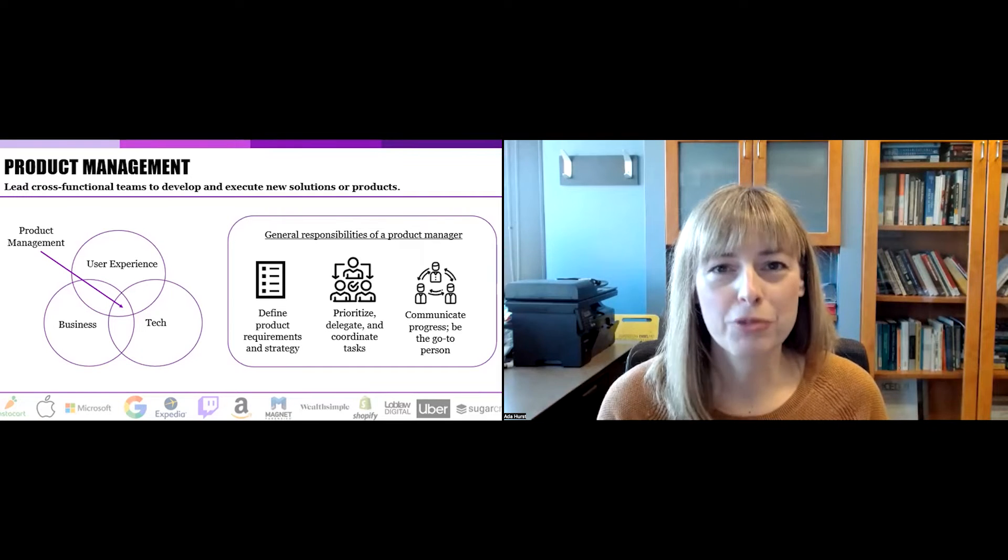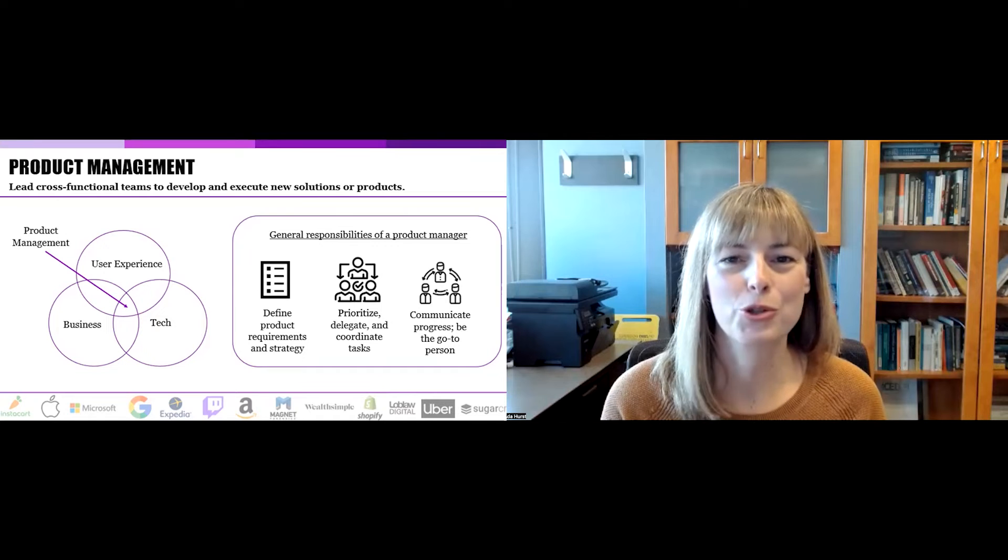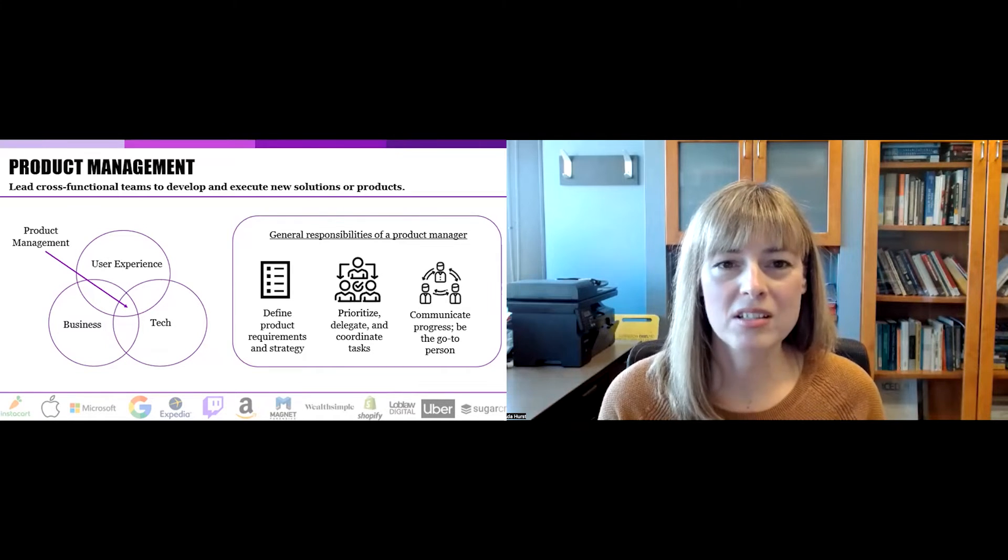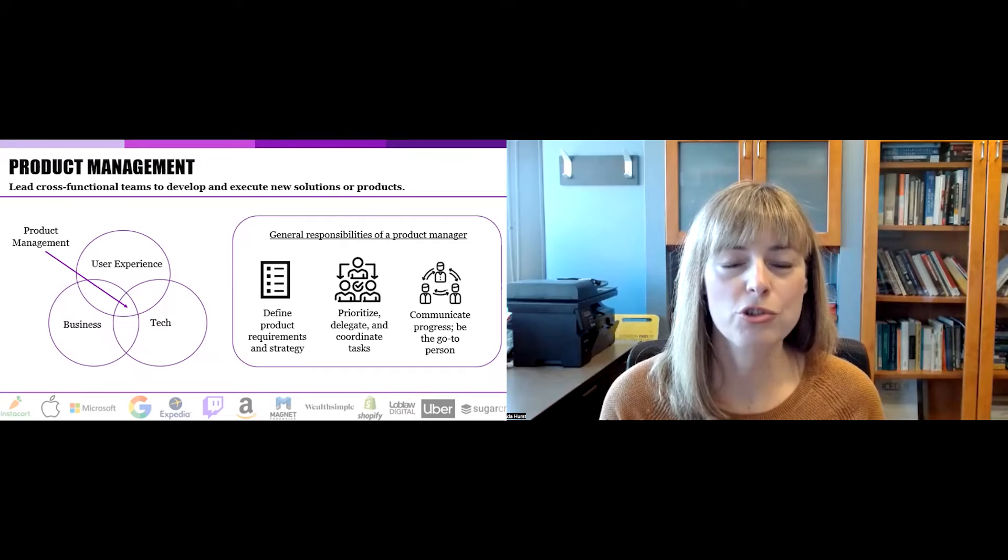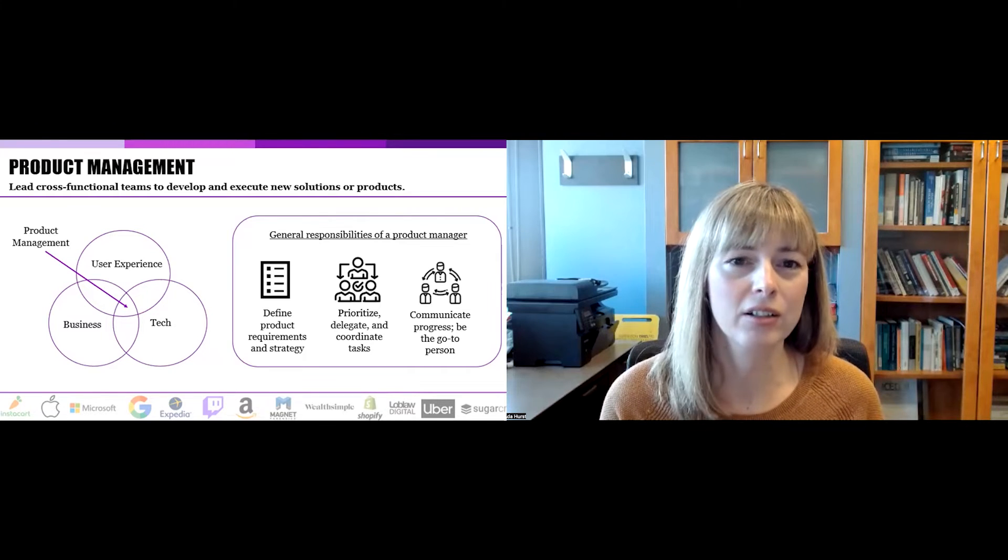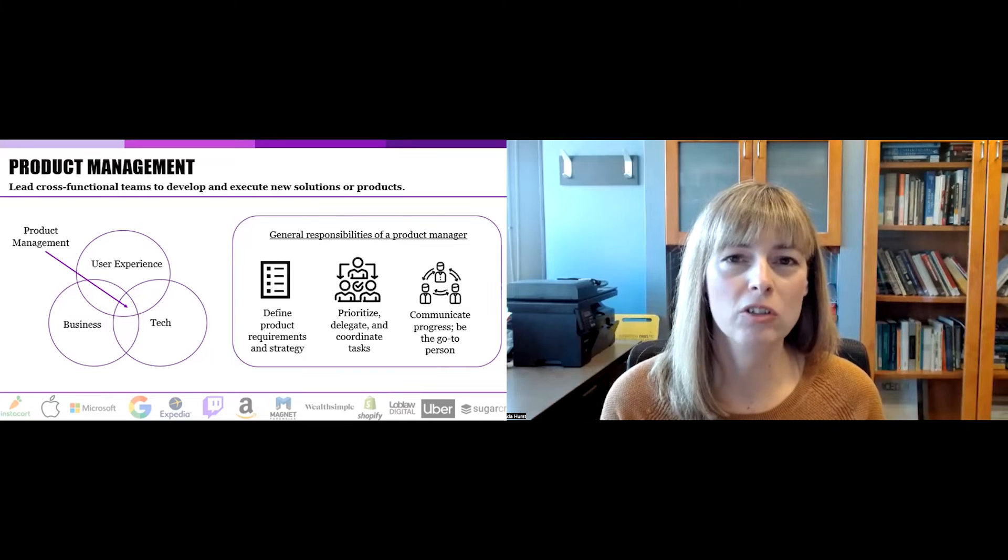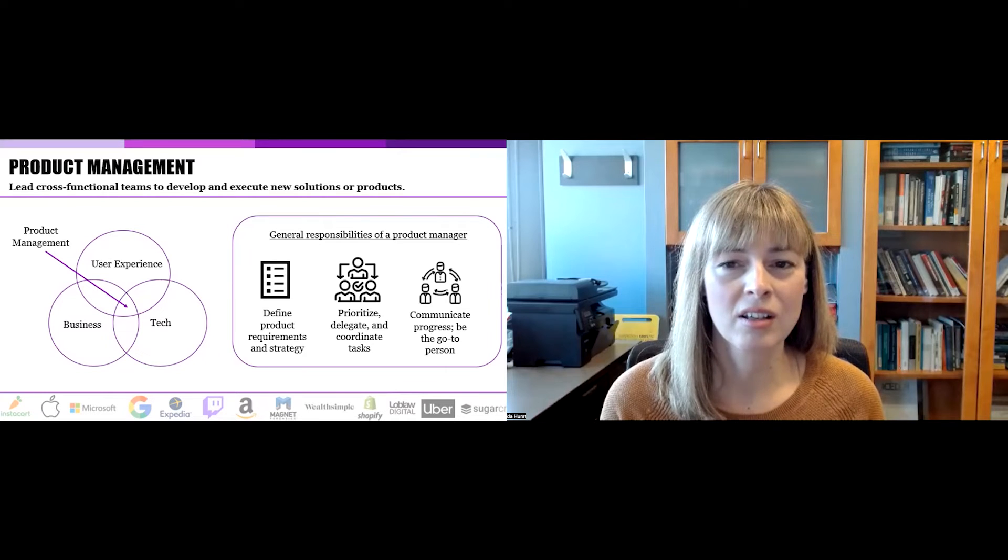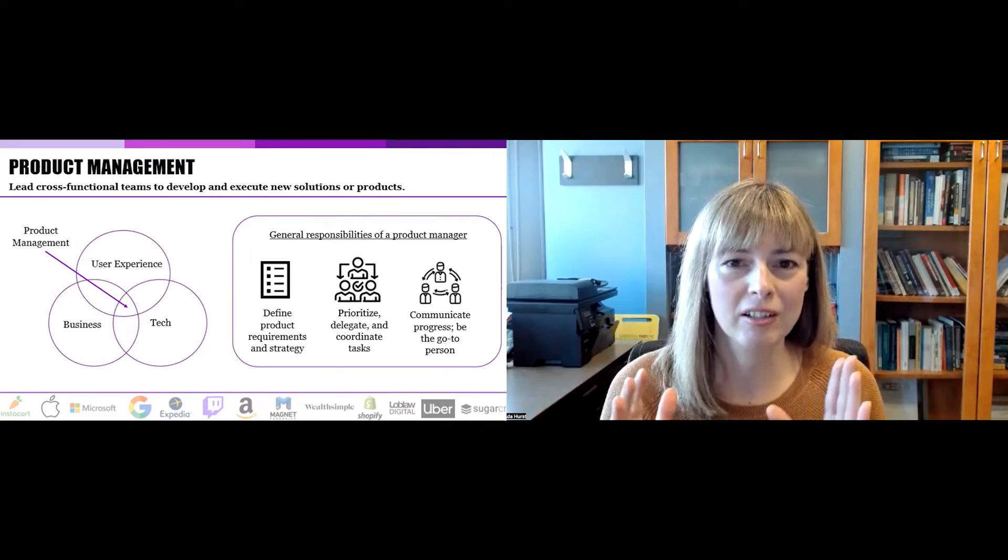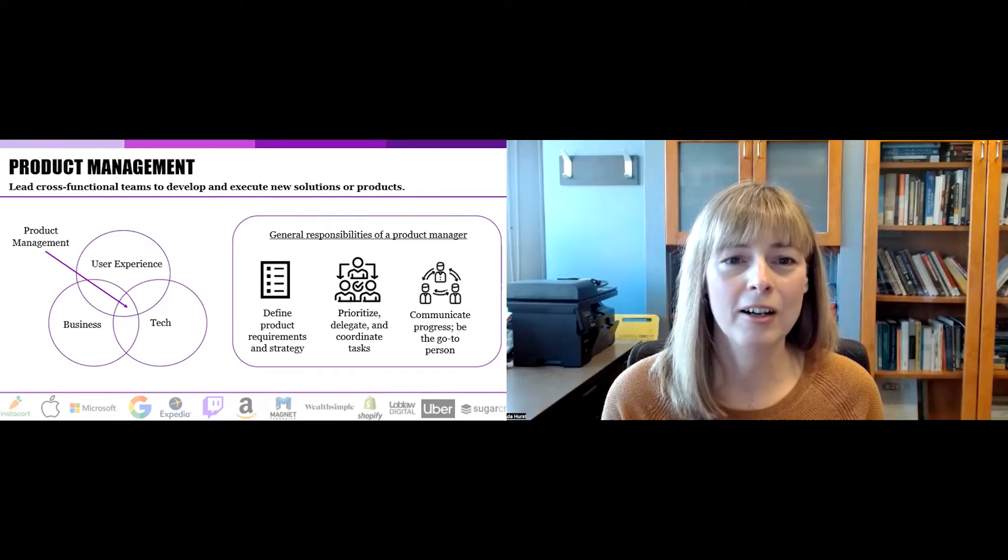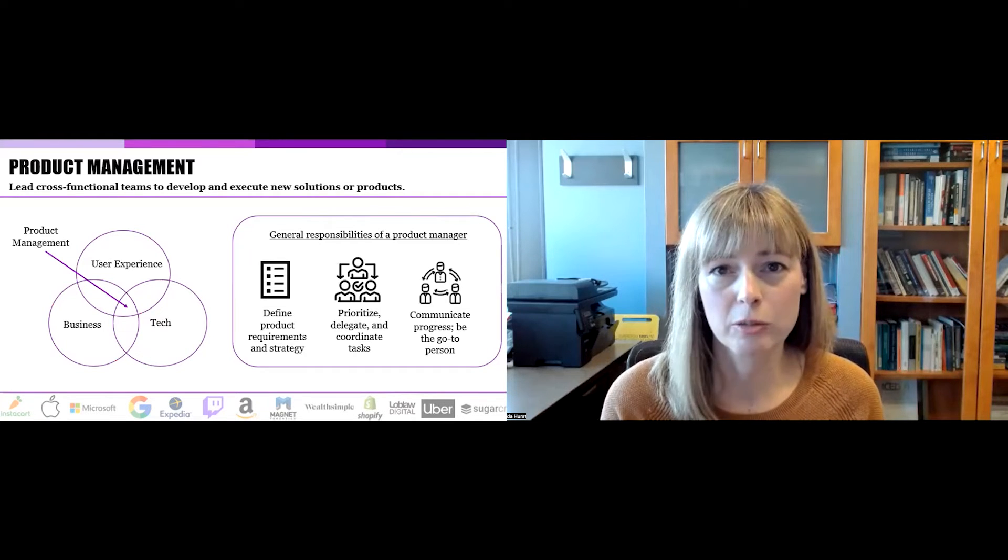So the first one is product management. It's PM for short. It's a very common career path. And what it does is it takes advantage of management engineers' unique combination of strong technical and soft skills. According to Glassdoor, in recent years, product management has been one of the top five jobs in the United States. And what we mean by a top job is we mean when you consider salary, job satisfaction, and available openings.